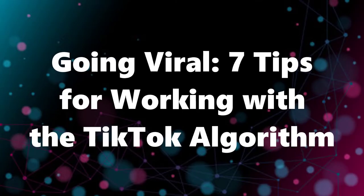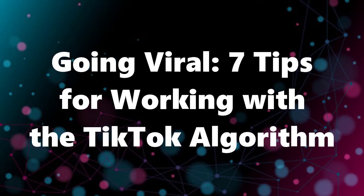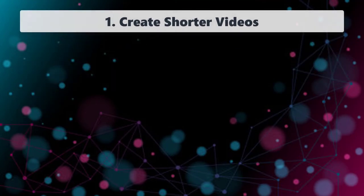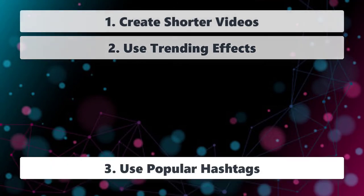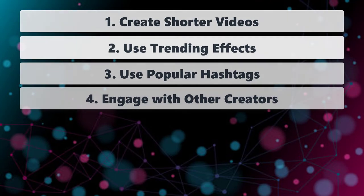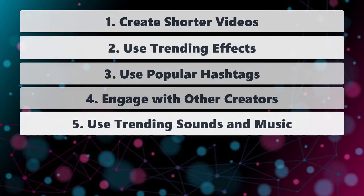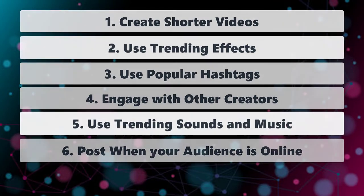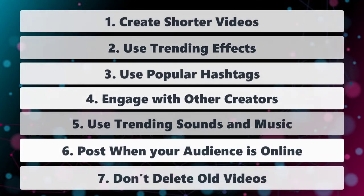I'll give you a brief 7 tips for working with the TikTok algorithm: 1. Create shorter videos. 2. Use trending effects. 3. Use popular hashtags. 4. Engage with other creators. 5. Use trending sounds and music. 6. Post when your audience is online. 7. Don't delete old videos.